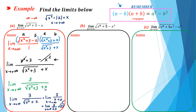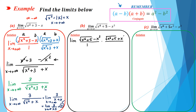For part b, you have to use the same technique as in part a — the conjugate method to find this limit. So directly, we have the limit of square root of x to the sixth power plus 5, divided by 1, multiplied by its conjugate: square root of x to the sixth power plus 5, over x cubed, plus x cubed, divided by the same conjugate in the denominator.